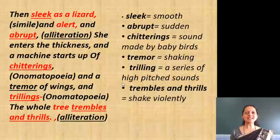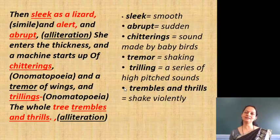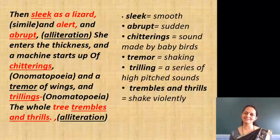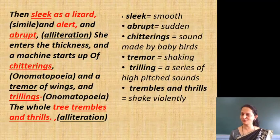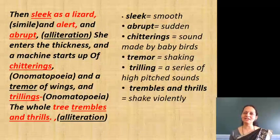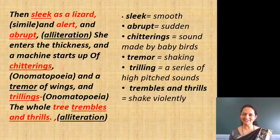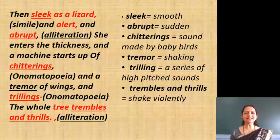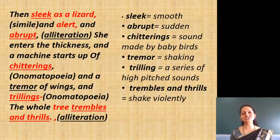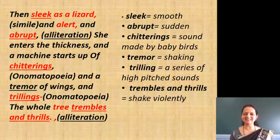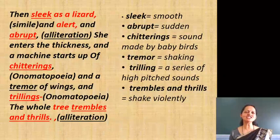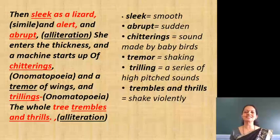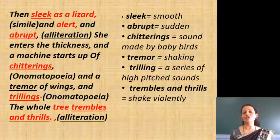'Then sleek as a lizard' — here simile is used. The movement of the bird is compared to a lizard, which does not make any noise while walking. Sleek means smooth. 'Then sleek as a lizard and alert and abrupt' — alert and abrupt is again alliteration. Abrupt means suddenly. 'She enters the thickness' — the bird enters the thickness of the tree smoothly and suddenly. 'And a machine starts up of chitterings' — chittering is the noise made by young chicks.